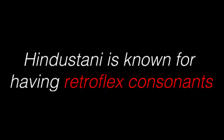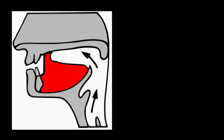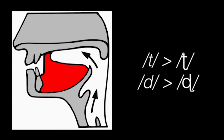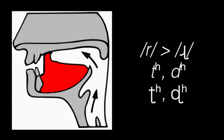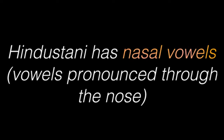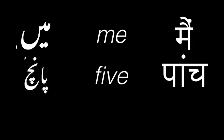Back to the modern day, let's have a look at Hindustani's phonology. The language is known for having retroflex consonants. To produce a retroflex sound, you need to curl your tongue back in your mouth. For example, D becomes a retroflex D, and there is also a retroflex R, as well as aspirated stops. This means Hindustani distinguishes between multiple D sounds. As for vowels, Hindustani has nasal vowels, seen in words like meh, panch and gha.